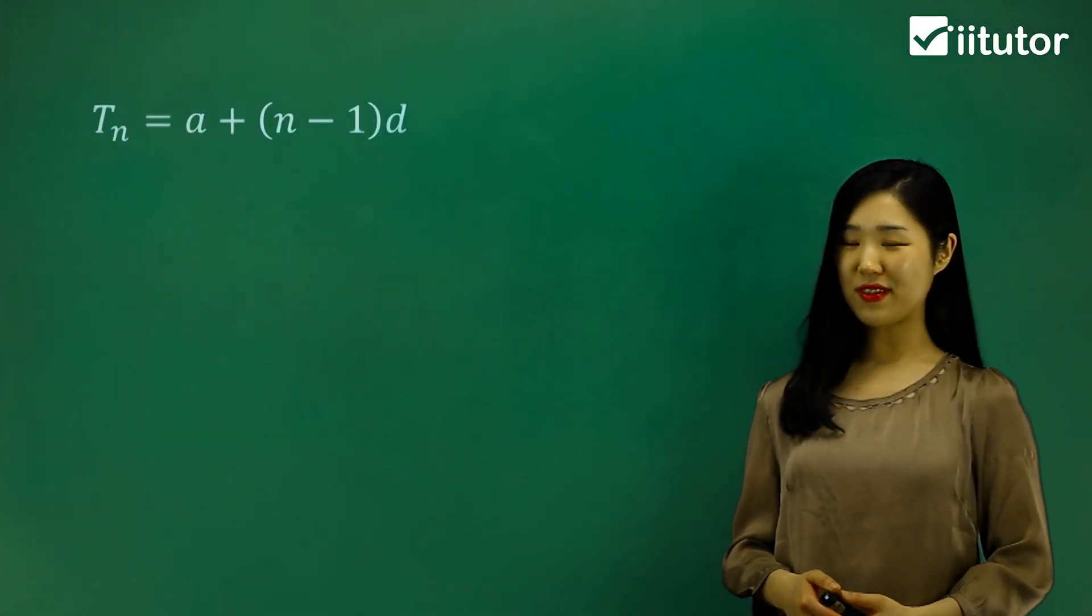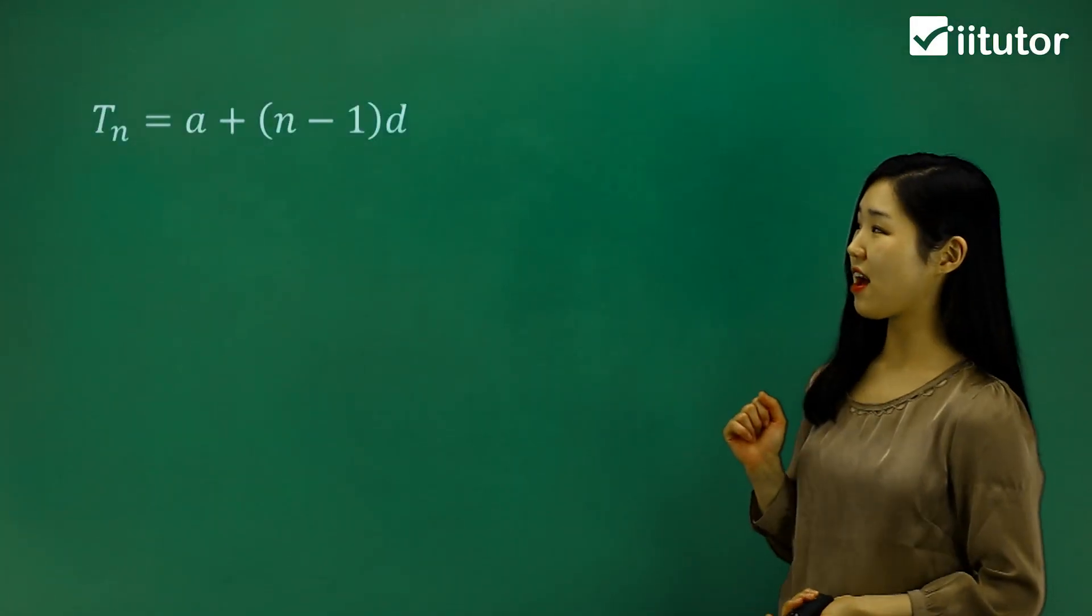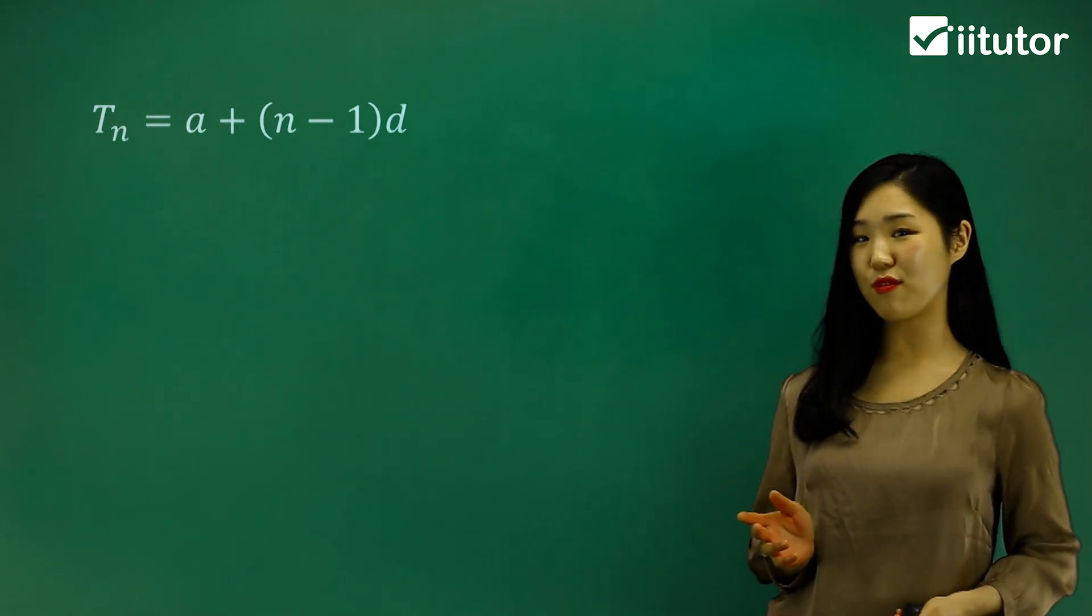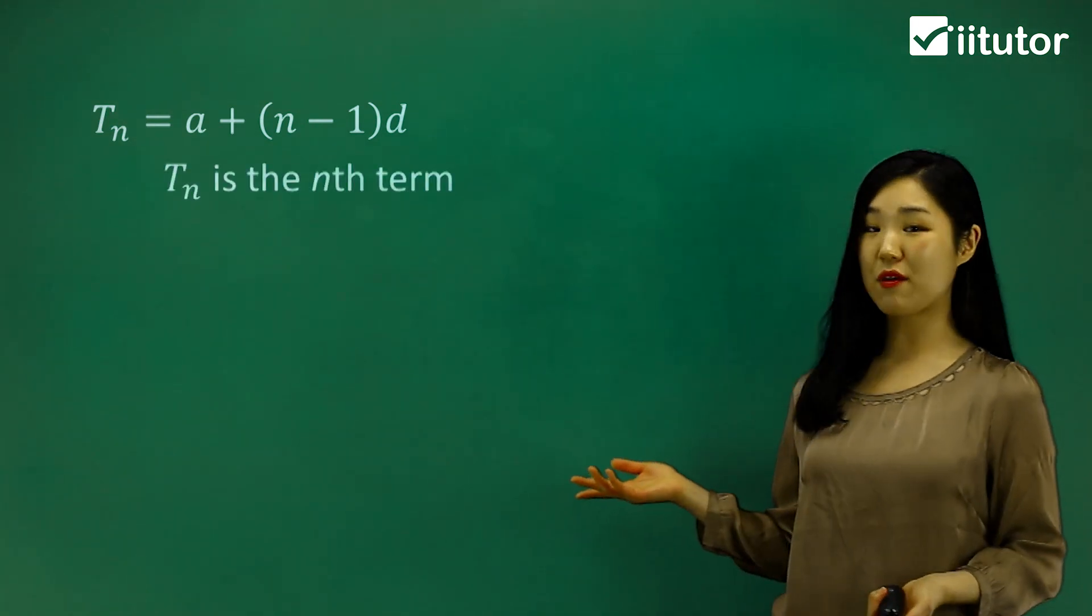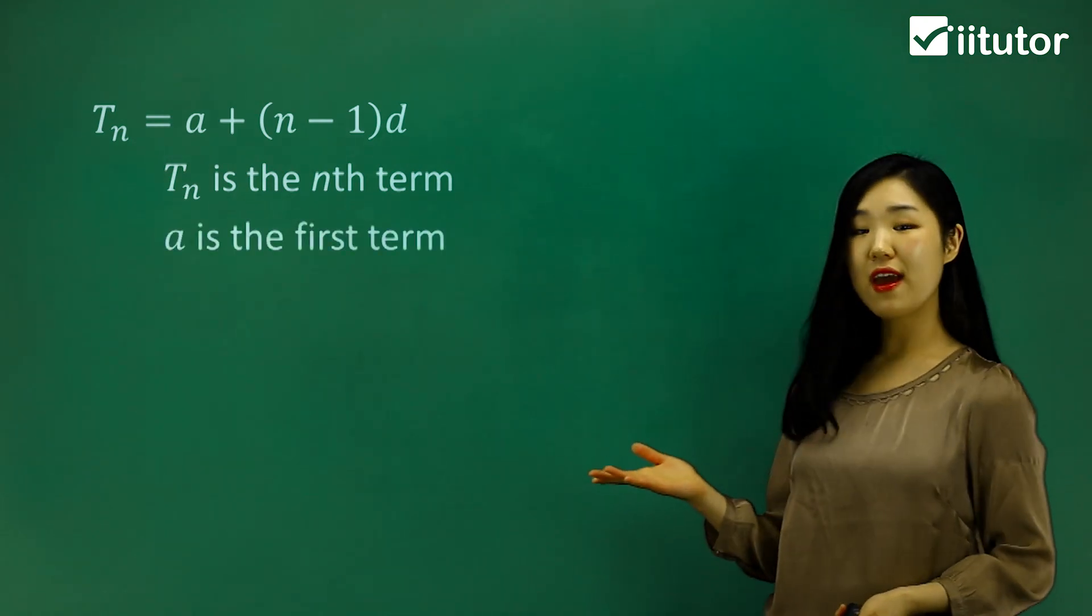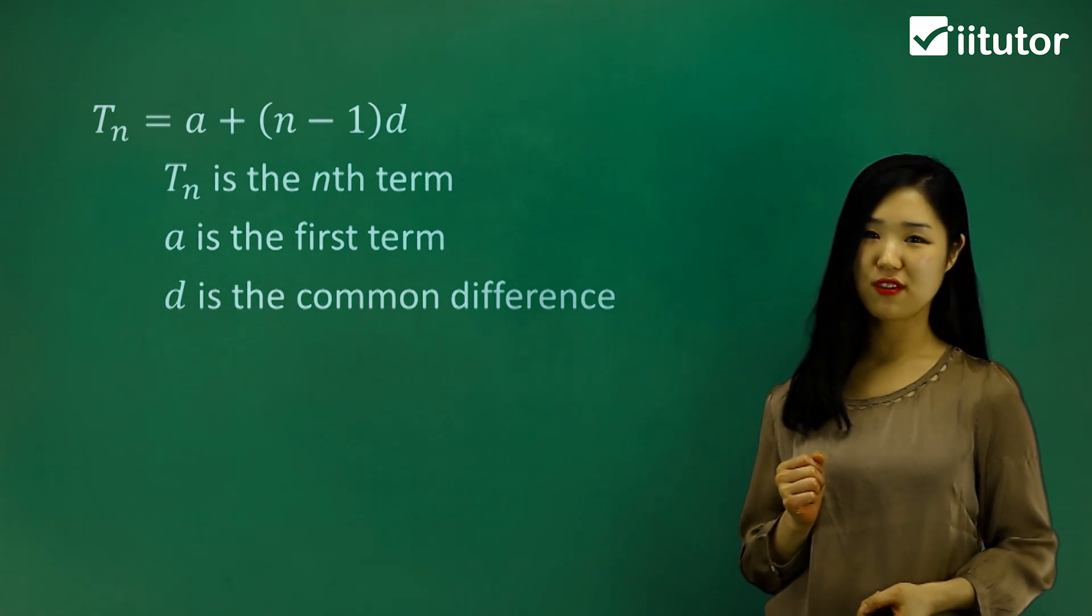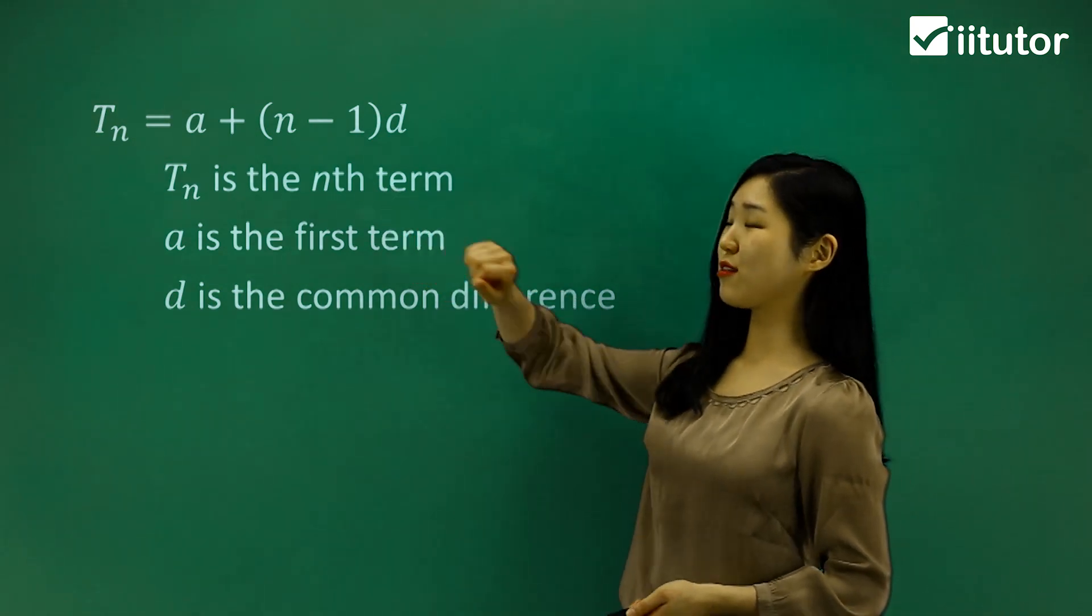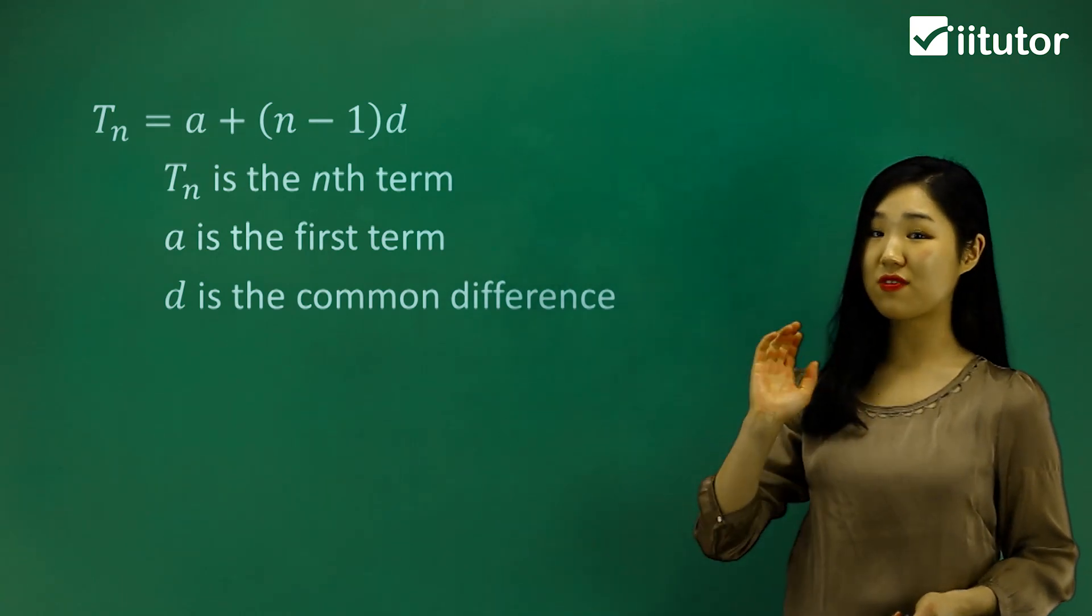Let's have a look at some more arithmetic sequence questions. Here's the formula, the rule for the arithmetic sequence: the tn formula. tn is simply our nth term, a is going to be our first term, and d is the common difference.